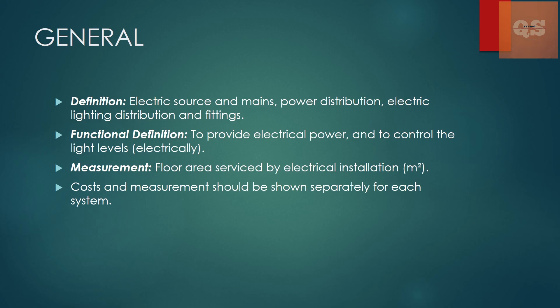If no details are given, we use the floor area for measurement purposes. But when each design stage gets updated and drawings start coming in, we get to quantify different elements based on numbers or length — cables on length, trays and fittings on length, and light fittings and power sockets by numbers. If no proper drawings or if they are incomplete, we mainly use floor area for measurement. Cost and measurement is done separately for each system.